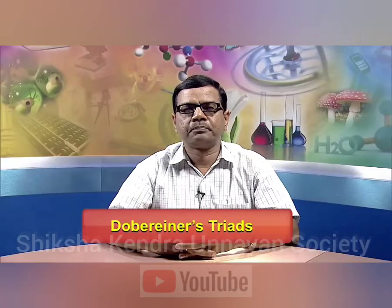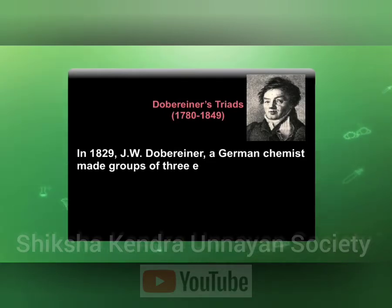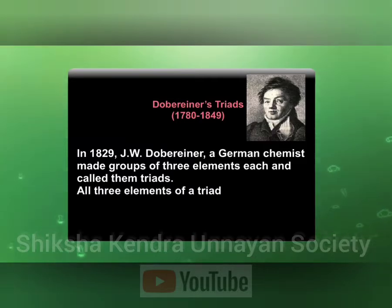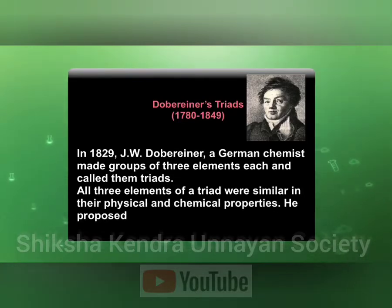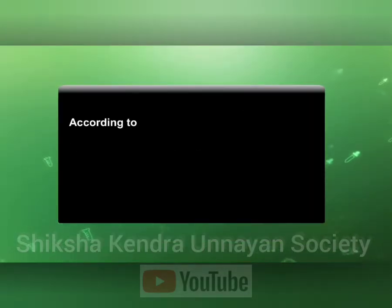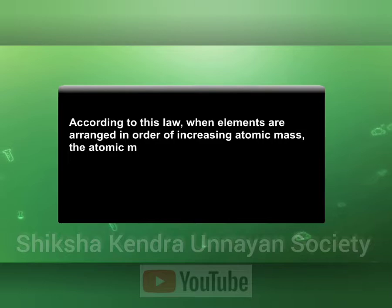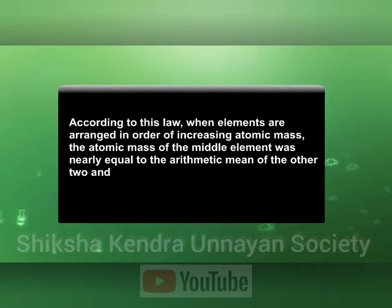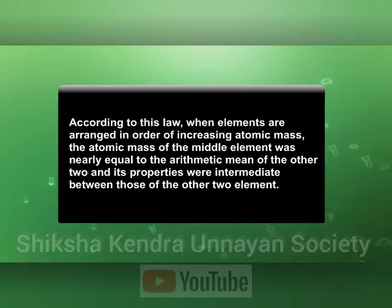Dobereiner's Triads: in 1829, J. W. Dobereiner, a German chemist, made groups of three elements and called them triads. All three elements in a triad were similar in their physical and chemical properties. He proposed a law known as Dobereiner's law of triads. According to this law, when elements are arranged in order of increasing atomic masses, the atomic mass of the middle element was nearly equal to the arithmetic mean of the other two, and its properties were intermediate between those of the other two elements.